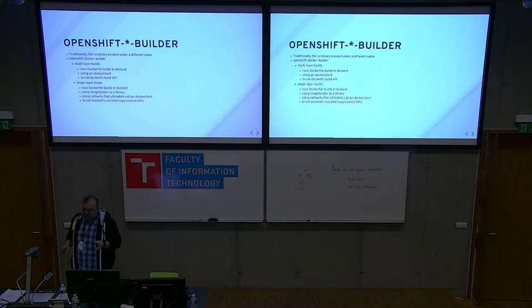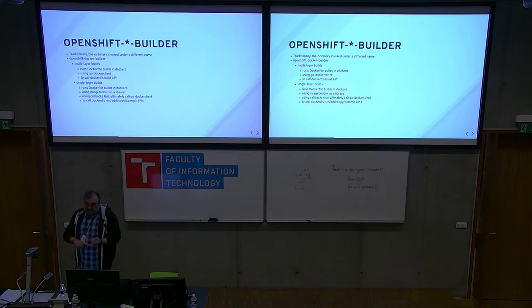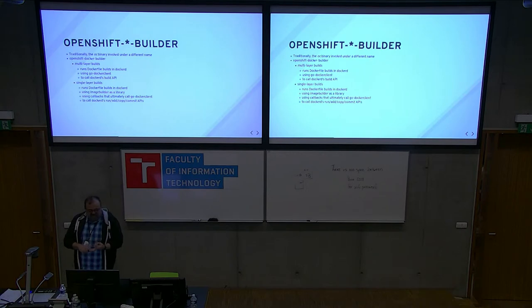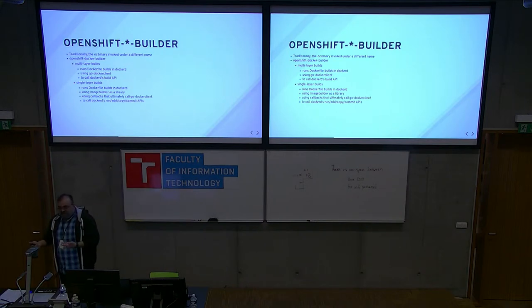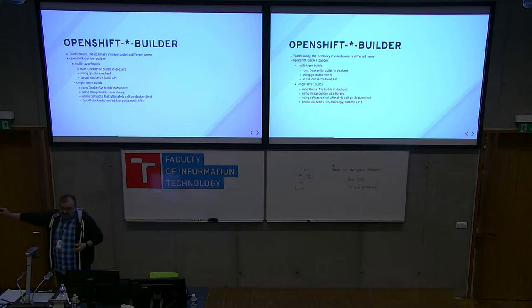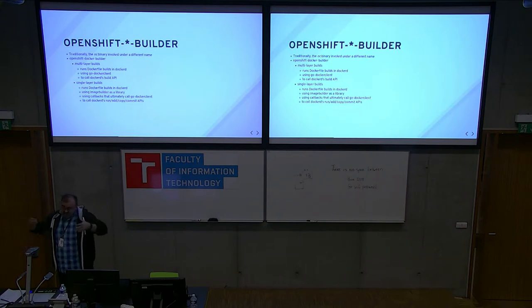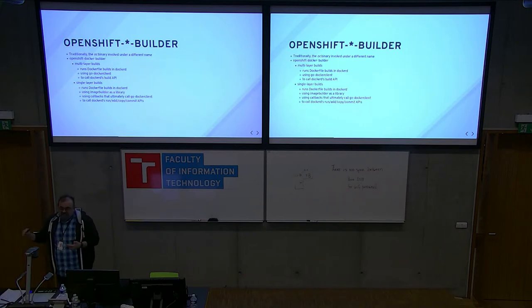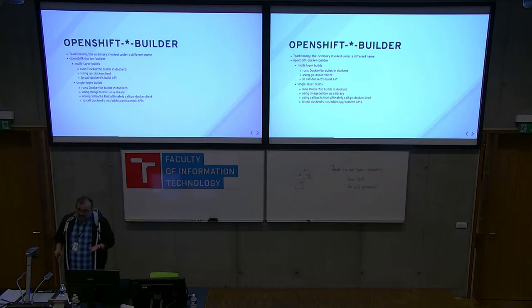For multi-layer builds, which are the default for Docker build, it would run Dockerfile builds using Docker's REST API. It was actually implemented using Go Docker Client. For single-layer builds, which was an optimization you could tell it to use, it would use Image Builder. Image Builder would go through your Dockerfile and run all the commands locally. If you encountered a RUN instruction, it would tell the Docker daemon to execute the command in the container it was working on. Anything that didn't require running a thing, it would just modify the configuration locally, and then commit it all at the end. So no matter how many instructions you had in your Dockerfile, Image Builder could build just one layer, which was cool — it produces a smaller image in many cases.